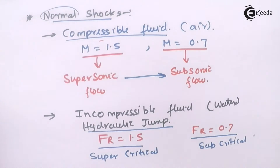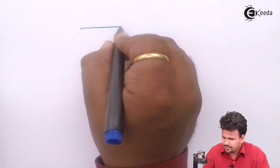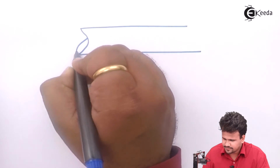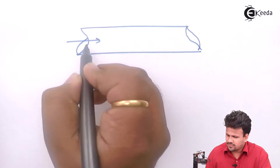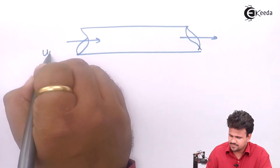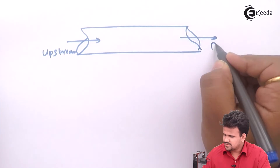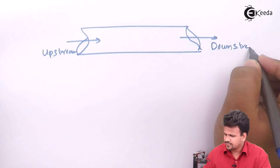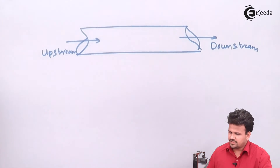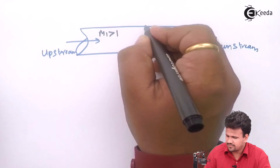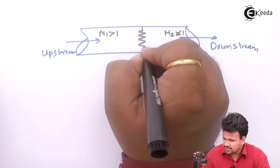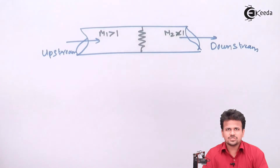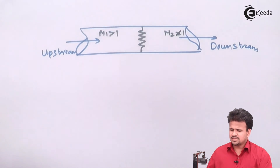For example, consider a duct in which the fluid is flowing. There is an upstream and a downstream. In the upstream, the fluid travels with a Mach number greater than one, and in the downstream the Mach number is less than one. During this transition, there will be a creation of a shock — that shock is called the normal shock. During normal shock, a sound is also heard because the shock wave gets converted into a sound wave.